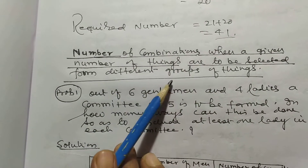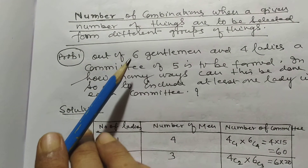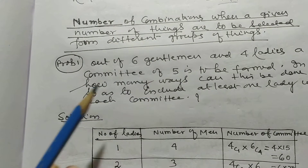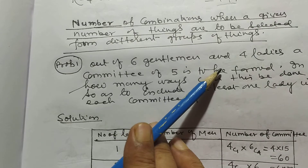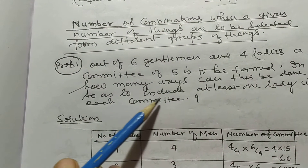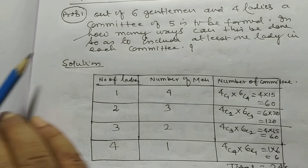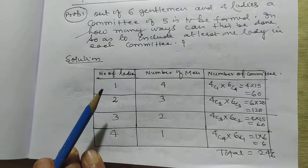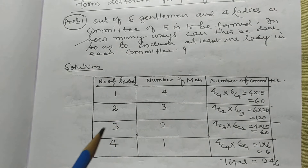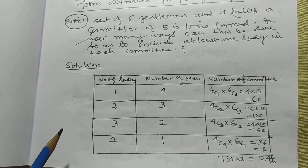Number of combinations when a given number of things are selected from different groups. Out of 6 gentlemen and 4 ladies, a committee of 5 is to be formed. In how many ways can this be done so as to include at least one lady in each committee? We need at least one lady, and 4 ladies are available. The possible distributions are: 1 lady + 4 men, 2 ladies + 3 men, 3 ladies + 2 men, or 4 ladies + 1 man.